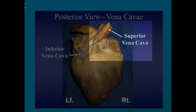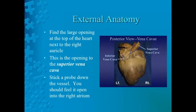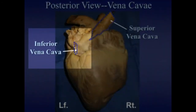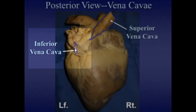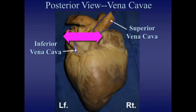The inferior vena cava brings blood to the heart from the lower part of the body. It is a little down and to the left of the superior vena cava. You will insert your thumb into this vessel and your index finger into the superior vena cava. You will be certain that you have entered the inferior vena cava as your thumb and finger will be able to touch. Your thumb should lead into the right atrium along with your index finger. Pause at this time to locate the inferior vena cava.